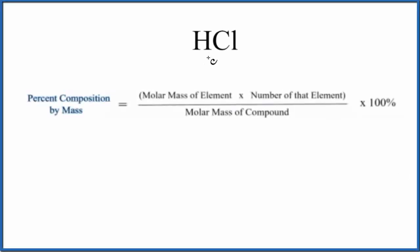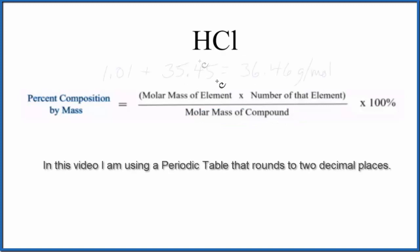In this video we'll find the percent composition by mass for each element in HCl, hydrogen chloride or hydrochloric acid if dissolved in water. Let's first find the molar mass for the entire compound. We found these values from the periodic table for each element.